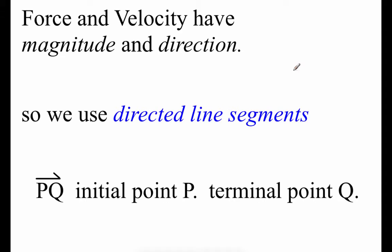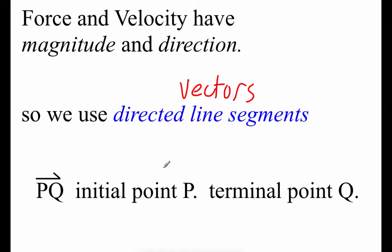Force and velocity each have a magnitude and direction, so we can use directed line segments — which we're going to call vectors — to help us represent or illustrate these values. A vector is a line segment named with two letters, like PQ. Since P is first, P is the initial point; Q is second, so that's the terminal point. So a directed line segment starting at point P and heading to point Q would be the vector PQ.